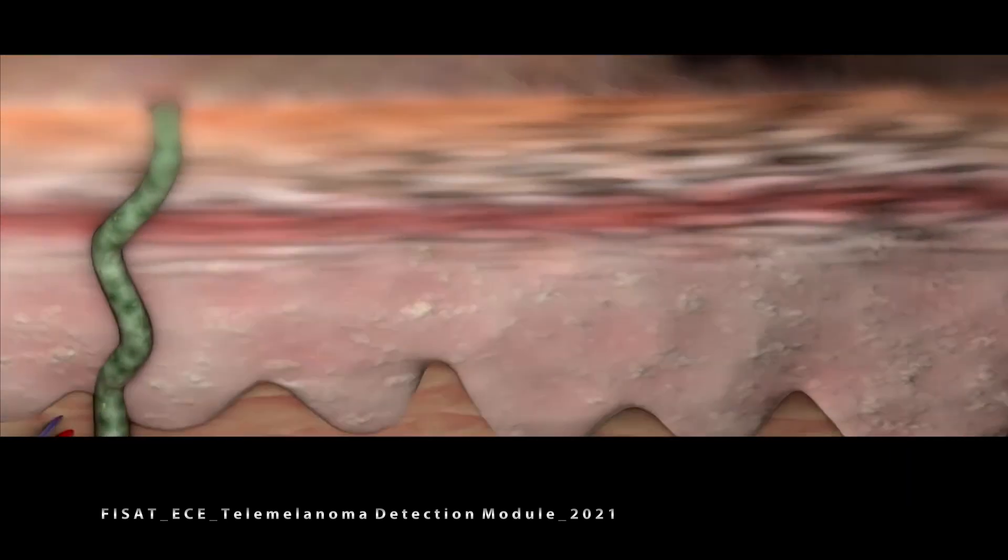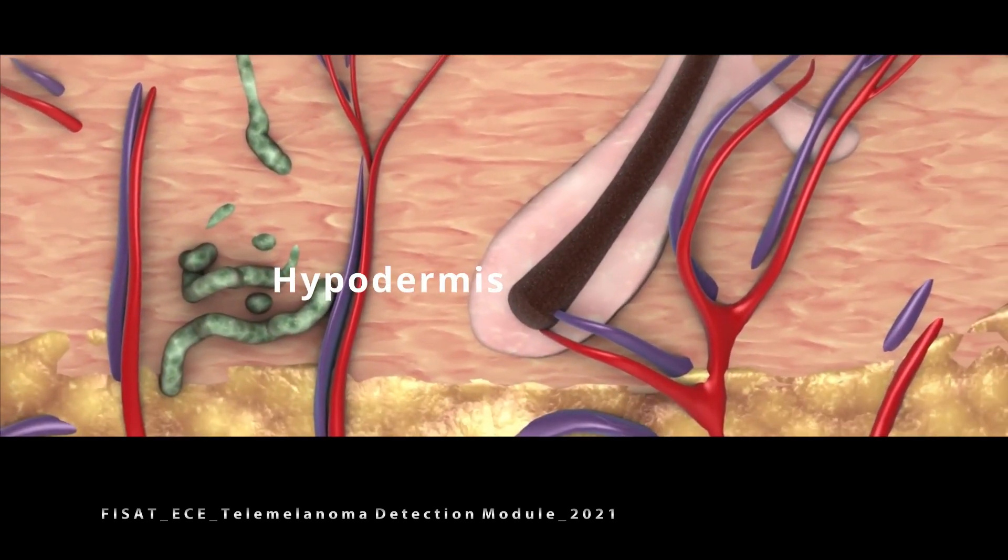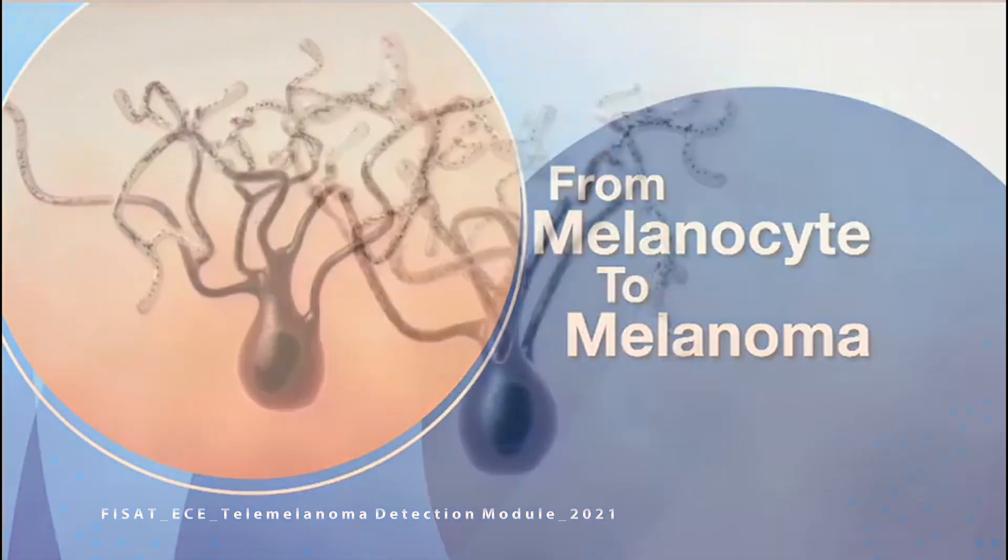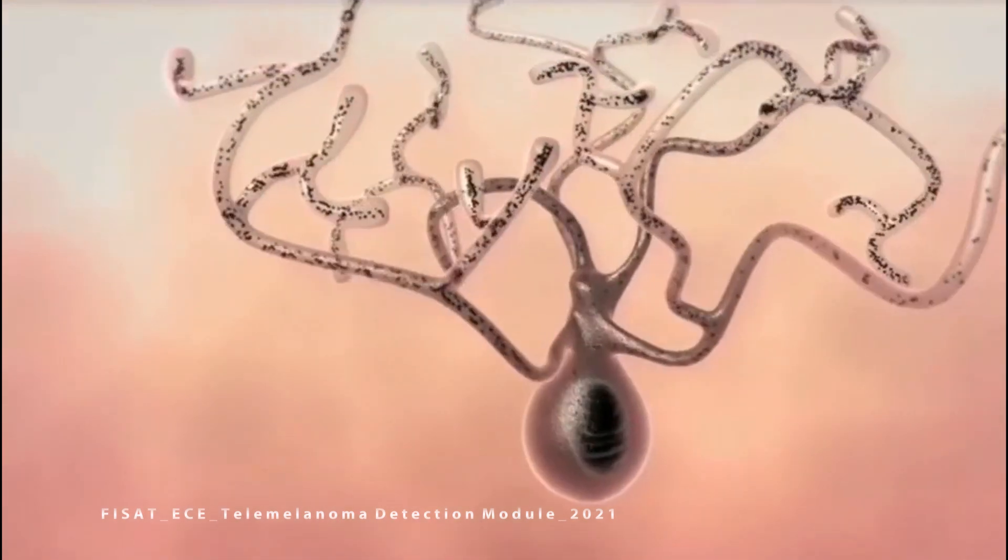The skin has three layers: the epidermis is the thin outer layer, the dermis is the middle layer, and the hypodermis is the deepest layer. Melanocytes produce the protective skin-darkening pigment melanin.